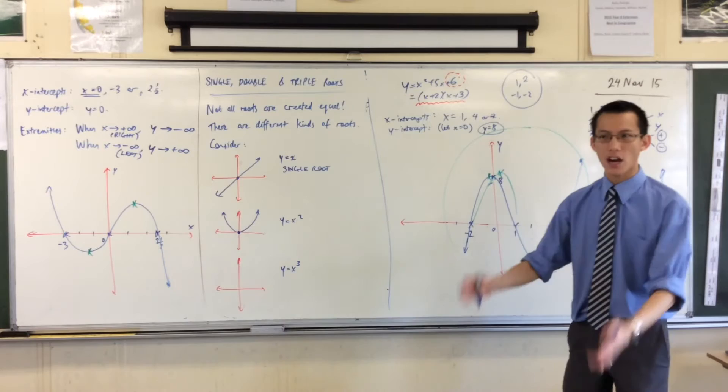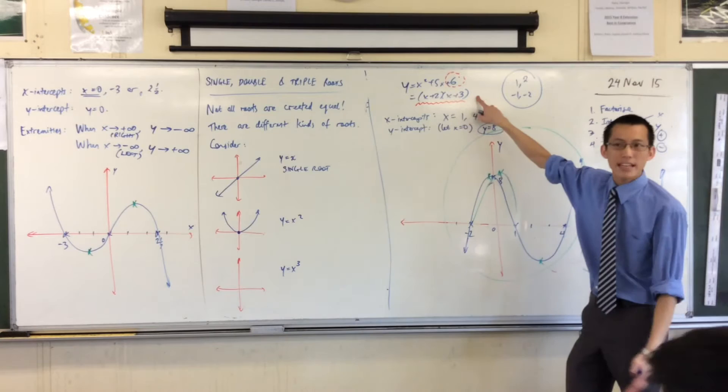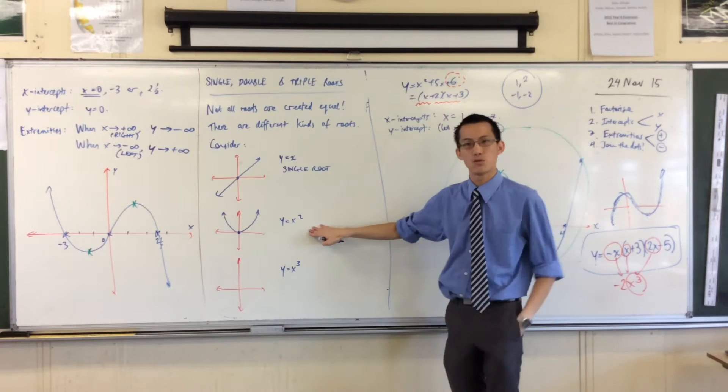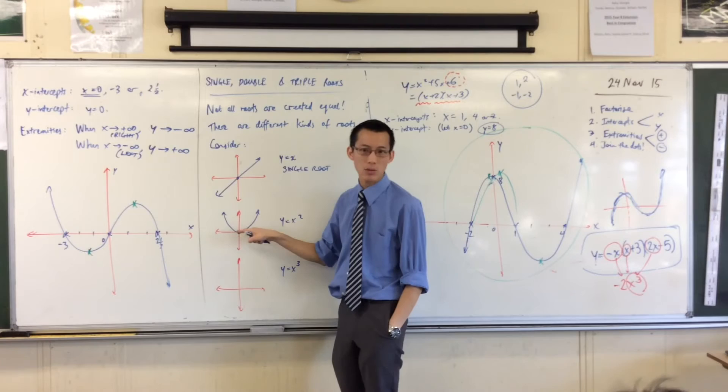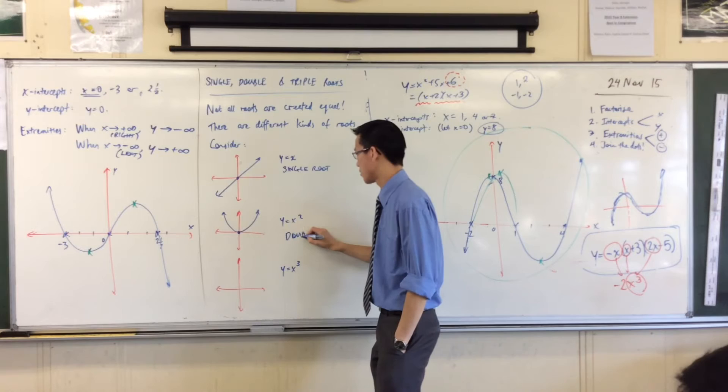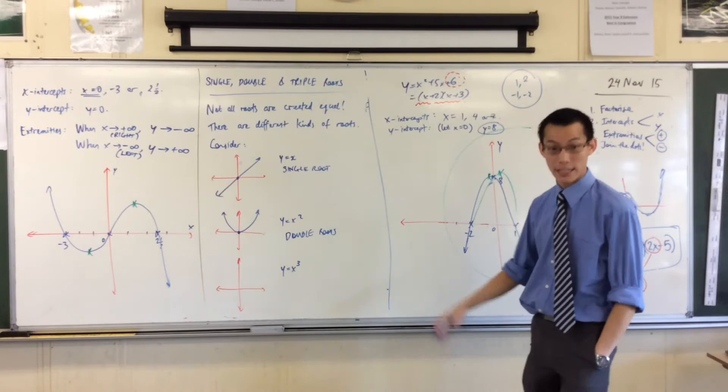Y equals x squared. Again, it's a graph you're super familiar with. It has a special name. It starts with a P. It's called a parabola. So again, let's draw this. It comes down, it stops, and it turns around like that. Now again, y equals x squared, it has a root at the origin. But can you see? It's a different kind of root.